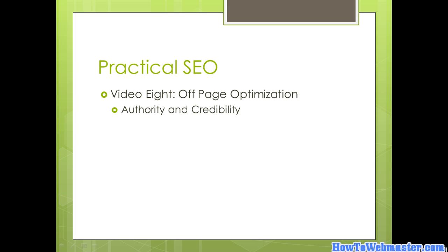Basically, off-page optimization is about authority and credibility. Google gives credence or leverage to sites that demonstrate that they have authority and credibility in their market or niche. What that means is that those sites that have authority and credibility will rank higher over time — and it doesn't happen right away. You won't be developing authority and credibility right away in a niche that might be new to you.